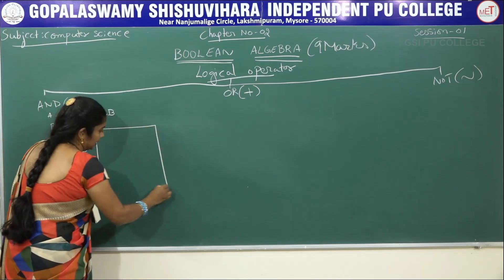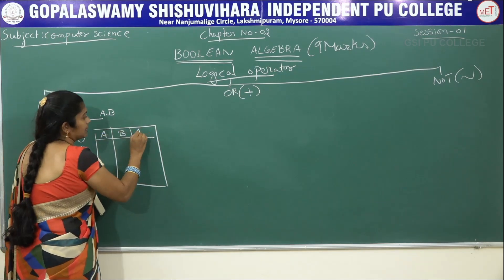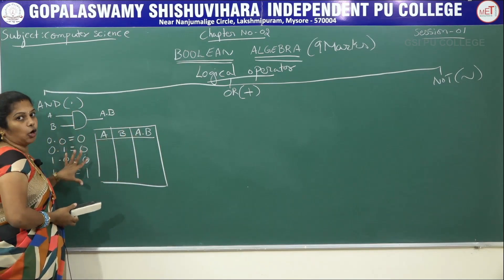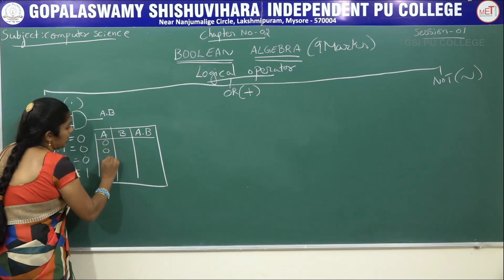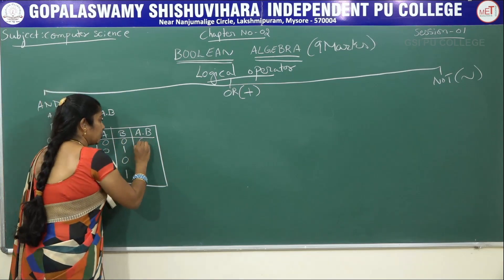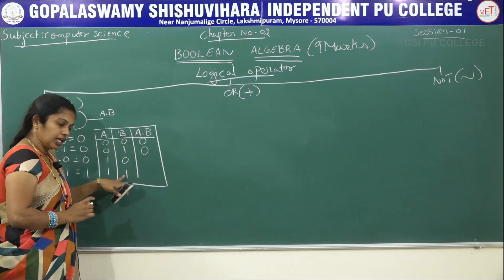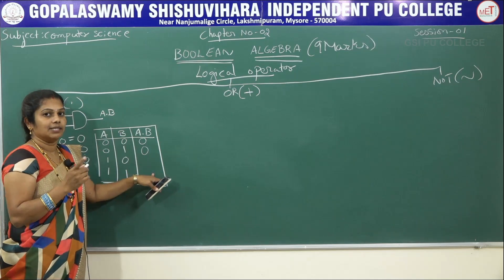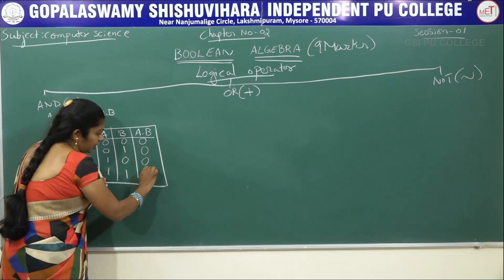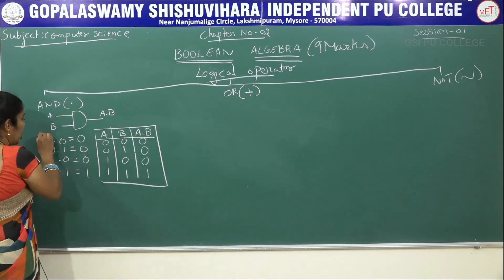The truth table for AND uses two variables A and B, with output A dot B. The inputs are: 0,0 → output 0; 0,1 → output 0; 1,0 → output 0; 1,1 → output 1. In AND operation, if all the inputs are true, then only the output becomes true; otherwise it is false.